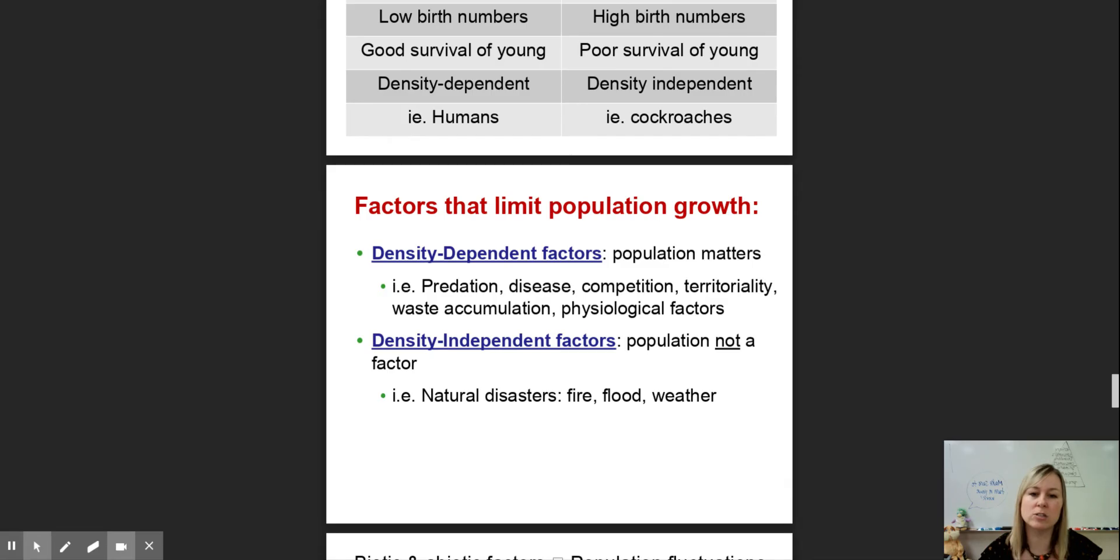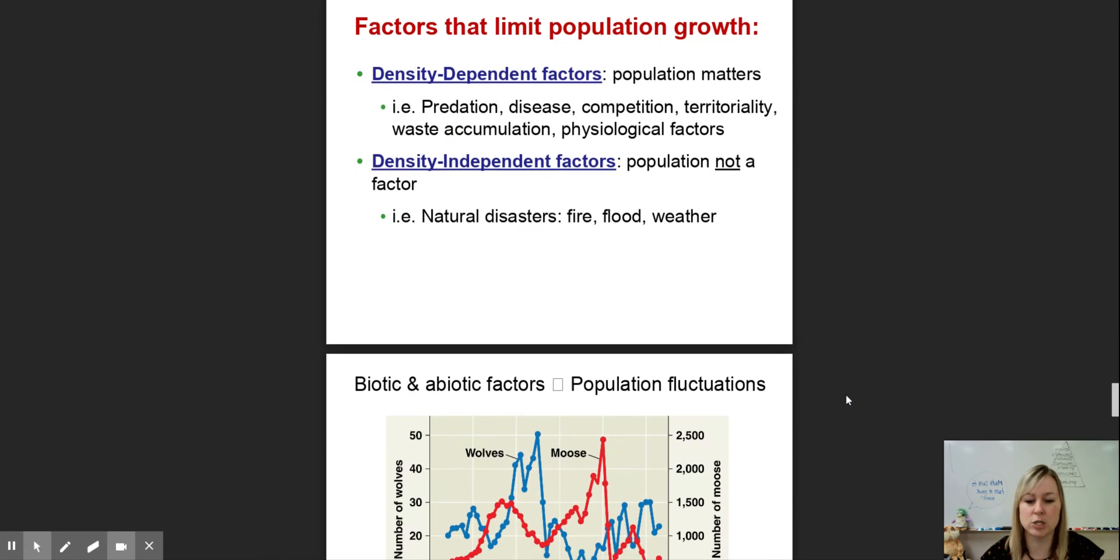Density independent factors are things that put populations under control and impose limits that have nothing to do with how many organisms are there. A natural disaster doesn't just happen whenever there's a lot of people. It happens when there's very few people as well, but they keep population numbers in check.